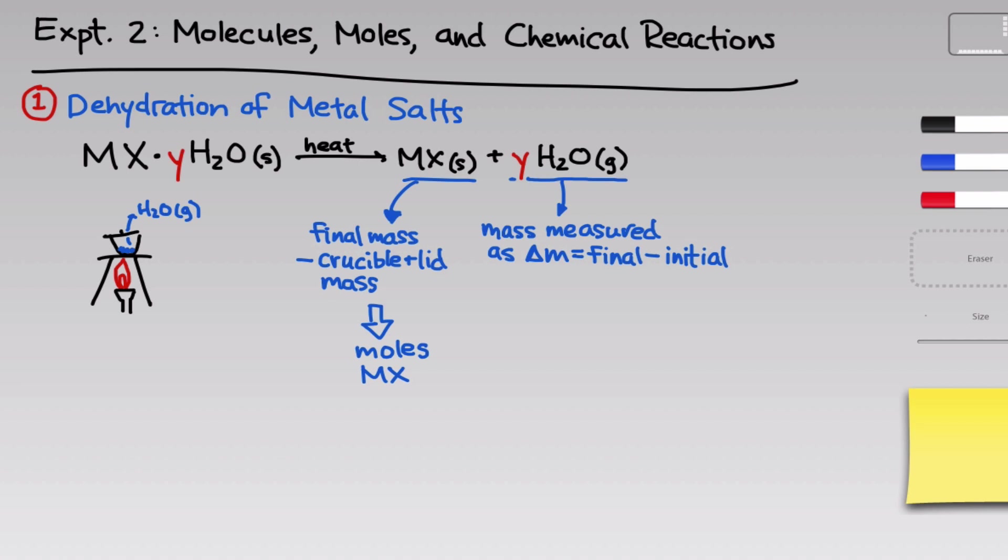The molar mass of water is constant, it's just 18 grams per mole, and so we can convert that delta M value to moles of H2O very easily. Now the ratio of these, the moles of H2O per mole of MX, tells us that value Y, the number of waters of hydration in the original sample.